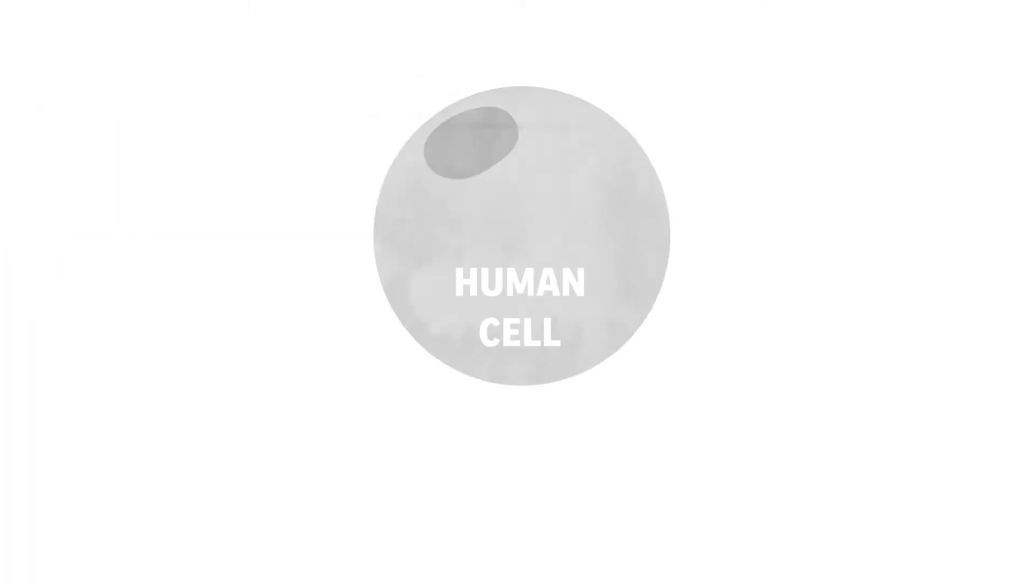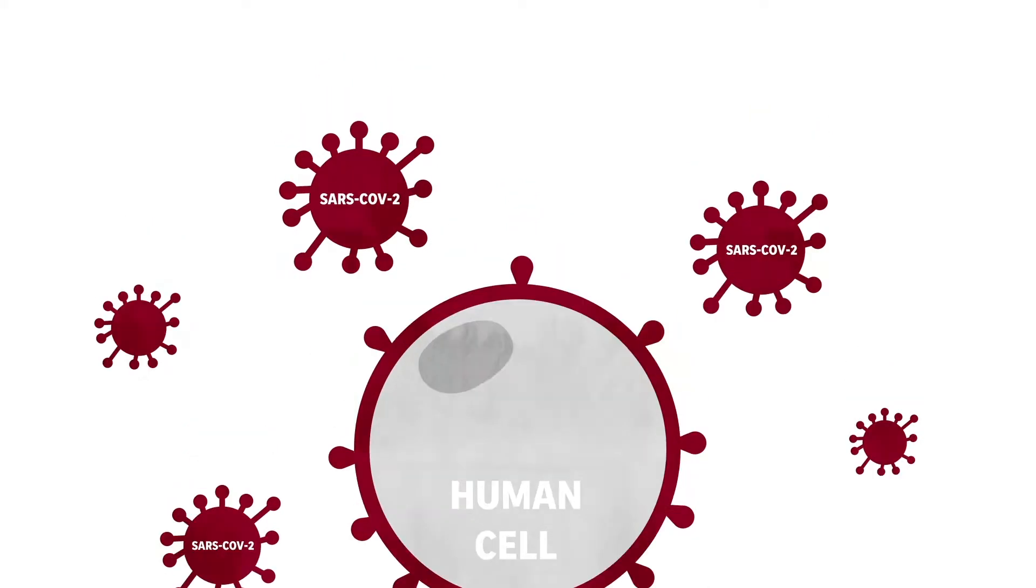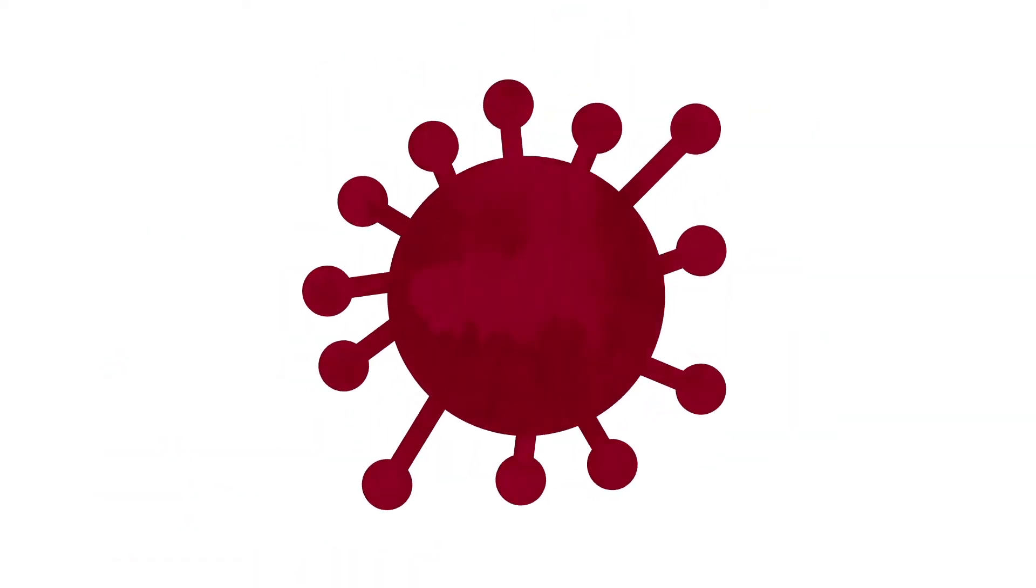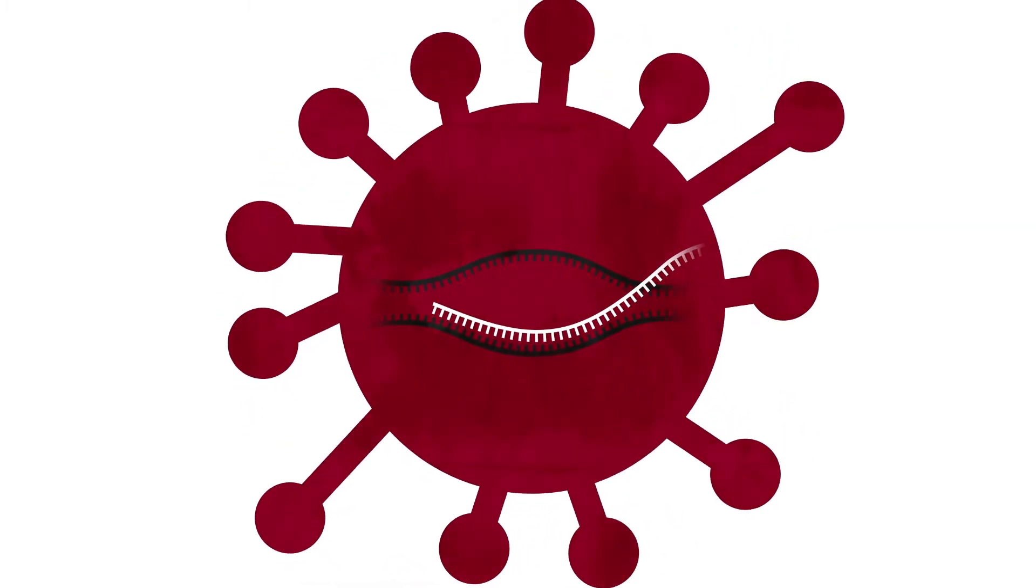mRNA vaccines take advantage of that protein-building process to trigger an immune response and build immunity to SARS-CoV-2, the virus that causes COVID-19. Instead of using a small dose of live or dead virus like some other vaccines, mRNA vaccines use a tiny piece of the virus's own genetic material.